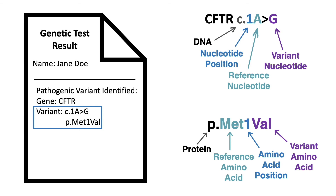This genetic change can also be described by the change in the protein. If you see a 'p.' on your report, this tells you what the change in the protein is. This p.Met1Val tells us that amino acid one in the protein is typically a methionine, but because of this change in the DNA, this amino acid changed to a valine.